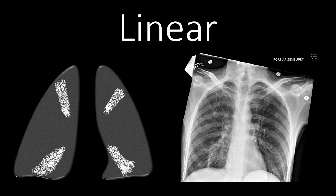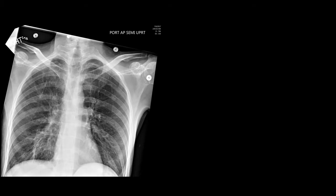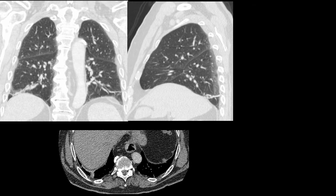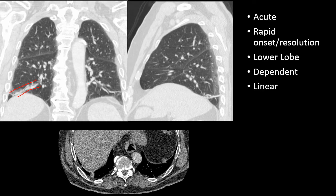Linear opacities are most commonly ascribed to atelectasis. Atelectasis is often either wedge-shaped or linear, and we're commonly going to see it in the lower lobes. Here you can see this linear opacity that wasn't present one day prior — likely some sub-segmental atelectasis due to poor inspiration. Using the D-ALPO framework, this occurred acutely, was lower lobe in a dependent location, and was linear, all leading to the diagnosis of atelectasis.